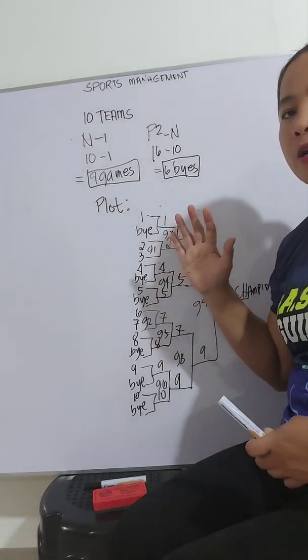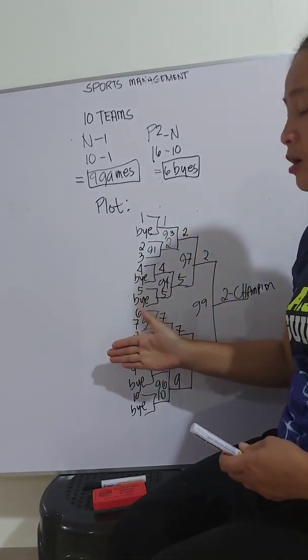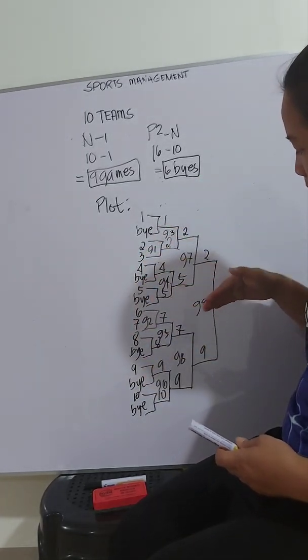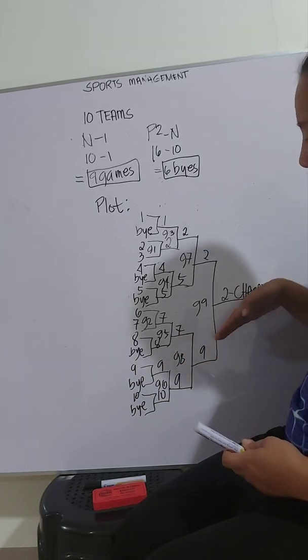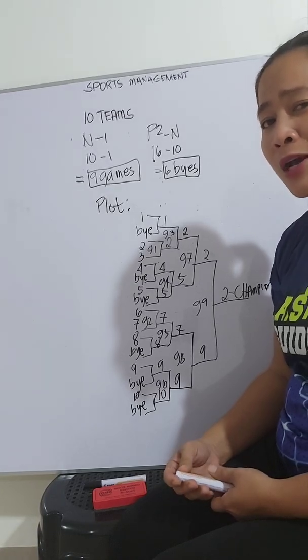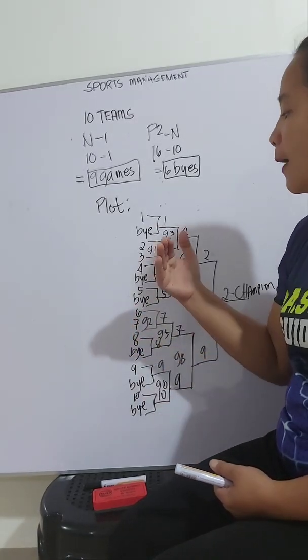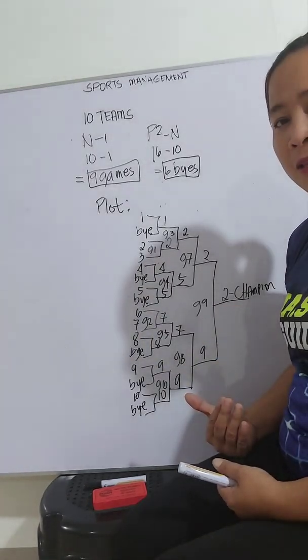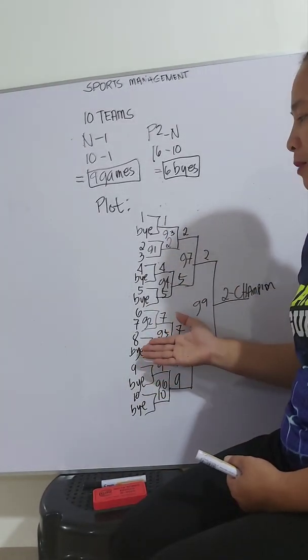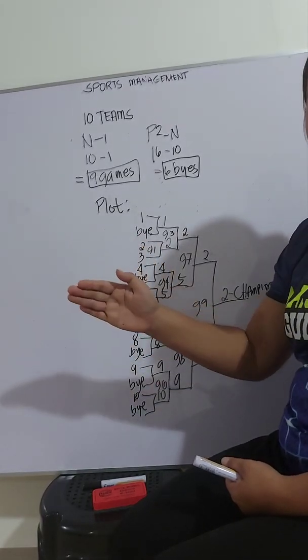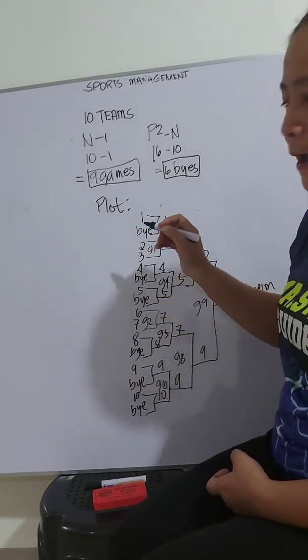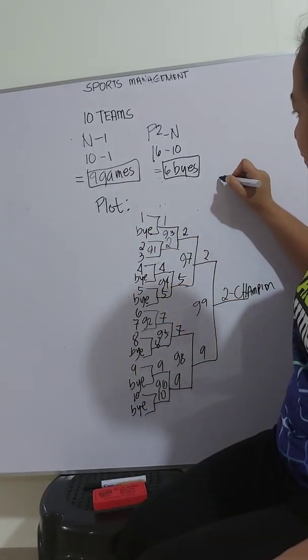In here, you can write any number. You can have any of the teams here. For example, you want team 9 as your champion, then it's up to you. But during final, it's up to the players who can make it to the top or who can be the champion in the last round of the competition. I hope you learned something from the presentation. Although you can make the other way instead of having this kind of plot. You can do the other way. For example, or the other way is like this.